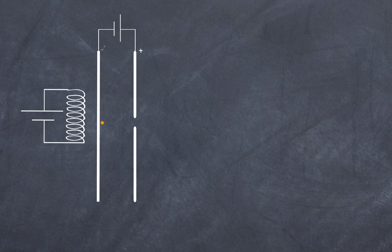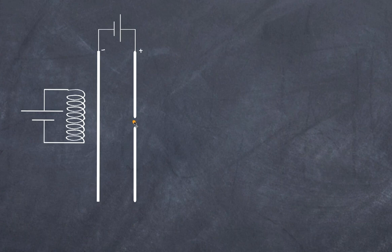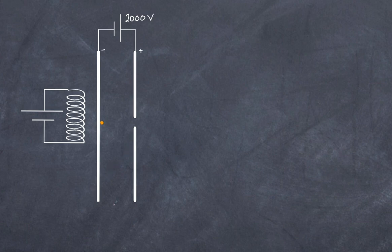We have a positively charged anode plate and a negatively charged plate. The electron leaves the negative plate, accelerates, and passes through an opening in the positive plate — we are effectively speeding up the charge. The setup uses 2000 volts across the plates with a separation of one centimetre. What is the velocity of the electron as it passes through the hole?